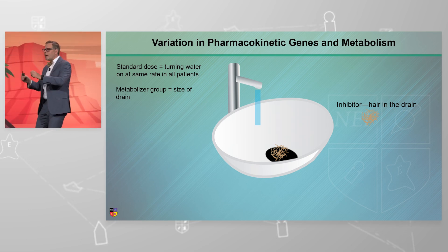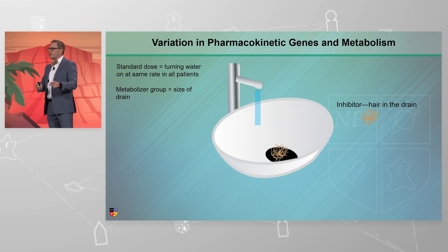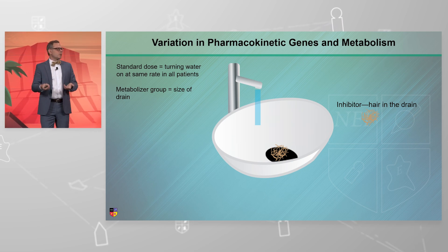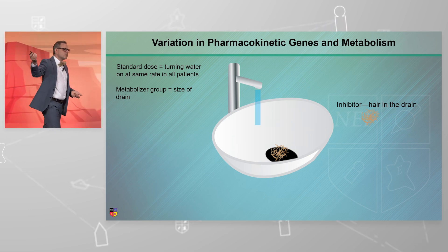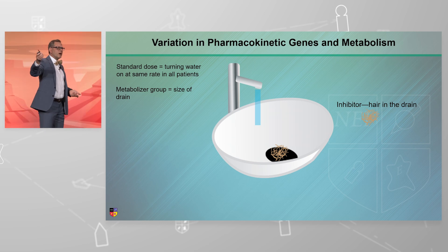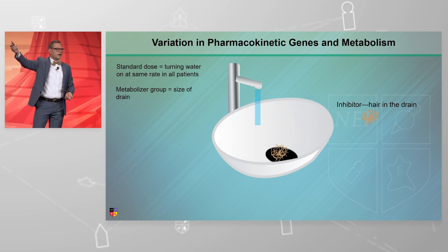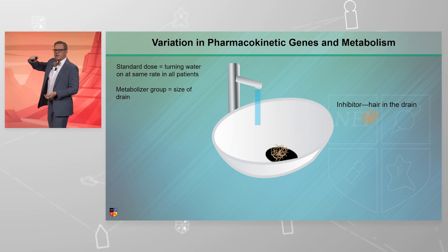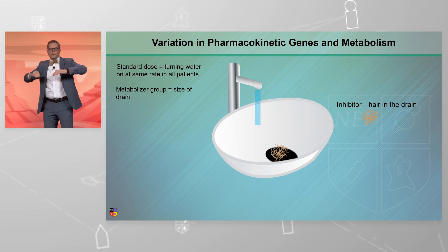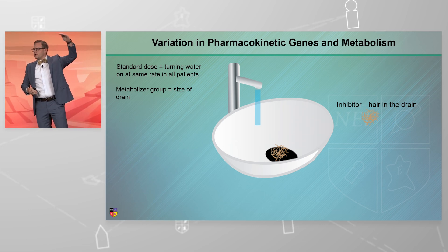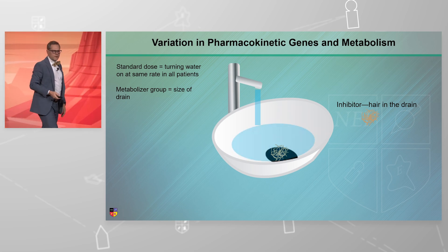I have changed the patient's phenotype by giving another medication. And sometimes we exploit that. Dr. McIntyre just talked about dextromethorphan and quinidine, or dextromethorphan and bupropion, where we give a medication that's a 2D6 inhibitor in order to increase the exposure or blood level of the dextromethorphan.